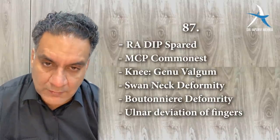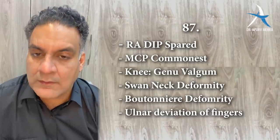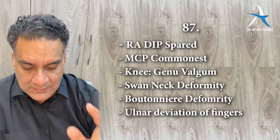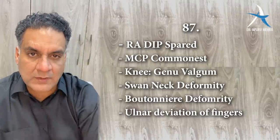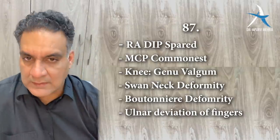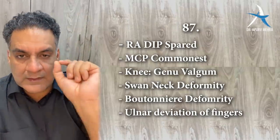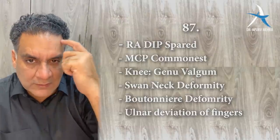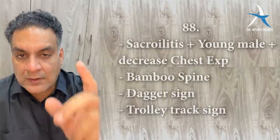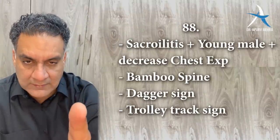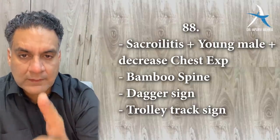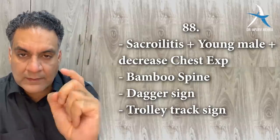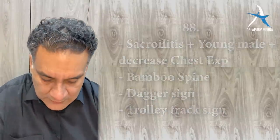Point number eighty-seven: rheumatoid arthritis — DIP is spared, MCP is most commonly involved. In the knee there is genu valgum. In the hand: swan neck deformity, boutonnière deformity, and ulnar deviation of fingers. Classic clinical scenario: young female with bilateral hand pain and morning stiffness — think RA. Whereas a young man with low back ache, sacroiliitis, reduced chest expansion — think ankylosing spondylitis. Classic X-ray findings: bamboo spine, dagger sign, trolley track sign.